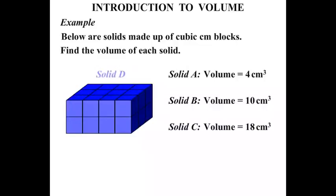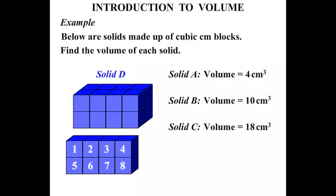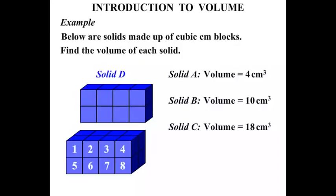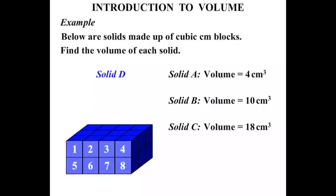The next one, Solid D. 1, 2, 3, 4, 5, 6, 7, 8. Okay, the front has 8 cubic centimeters there. Now if we move that down, we can see the next layer, and then another layer. So what have we got? We've got 3 lots of 8, and 3 eights are 24. So Solid D has a volume equal to 24 cubic centimeters.